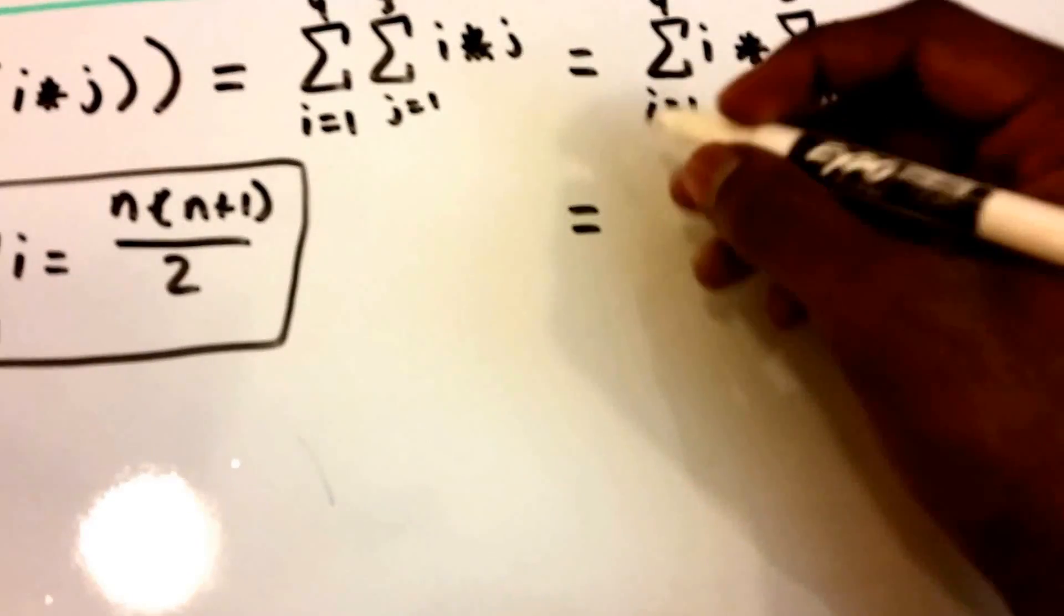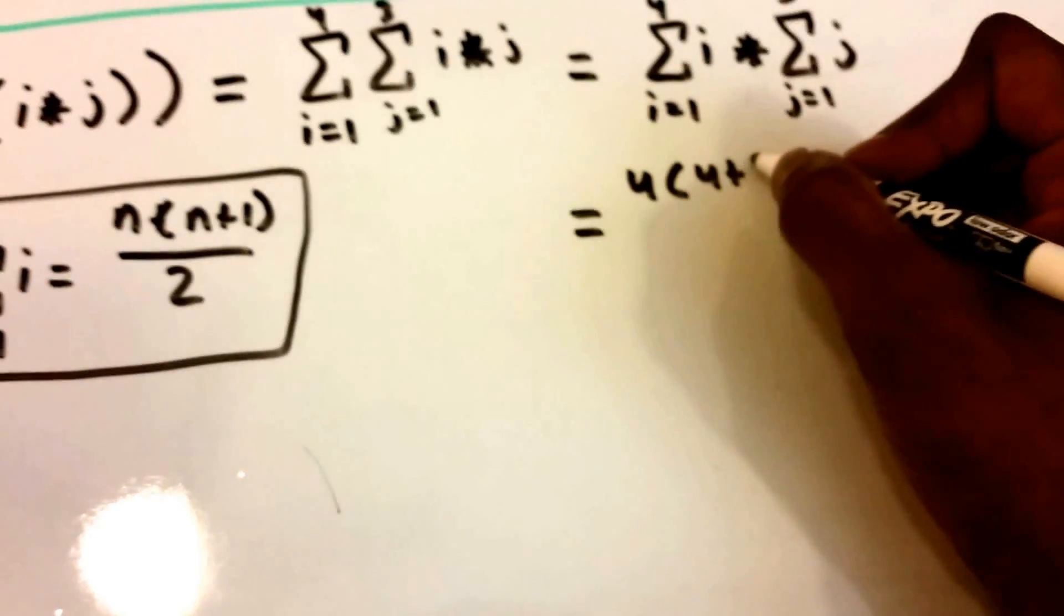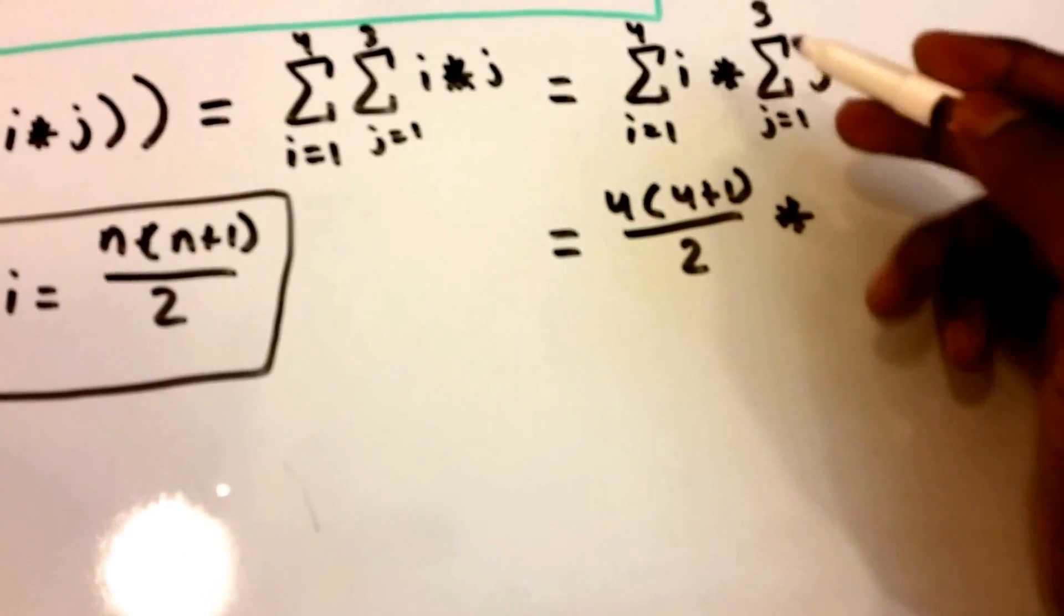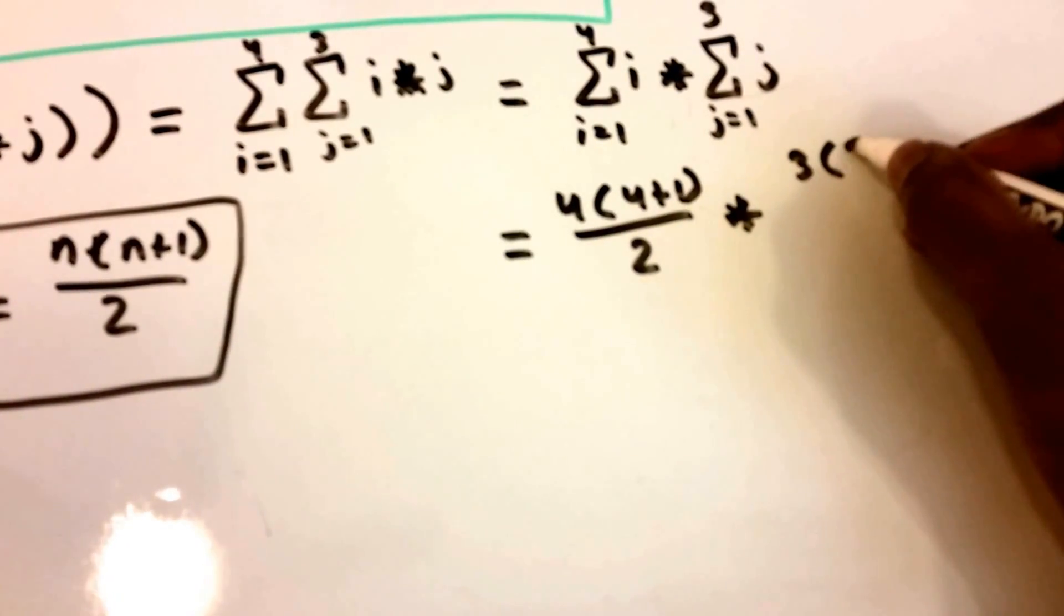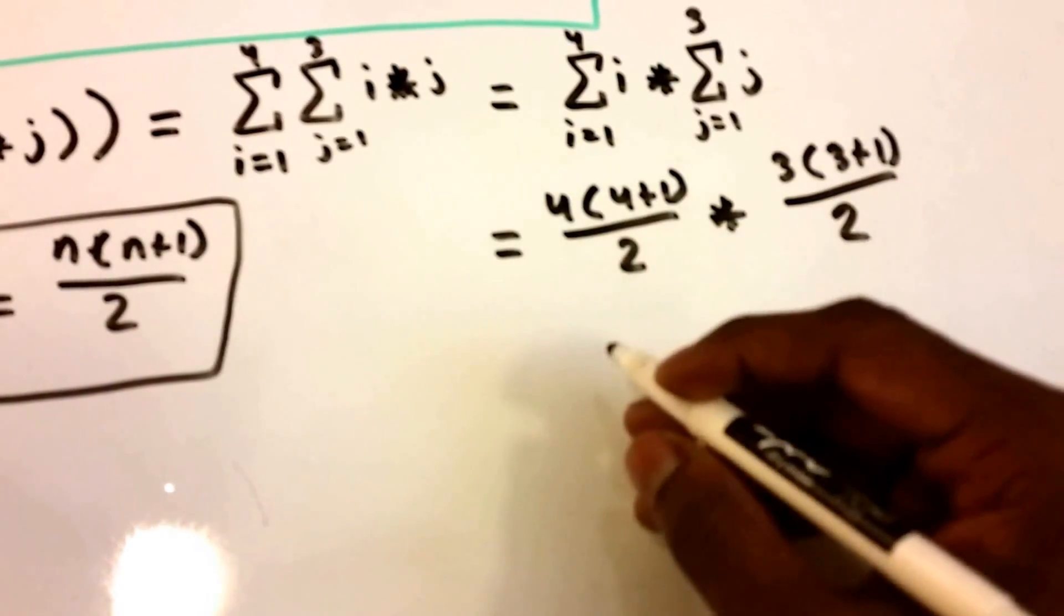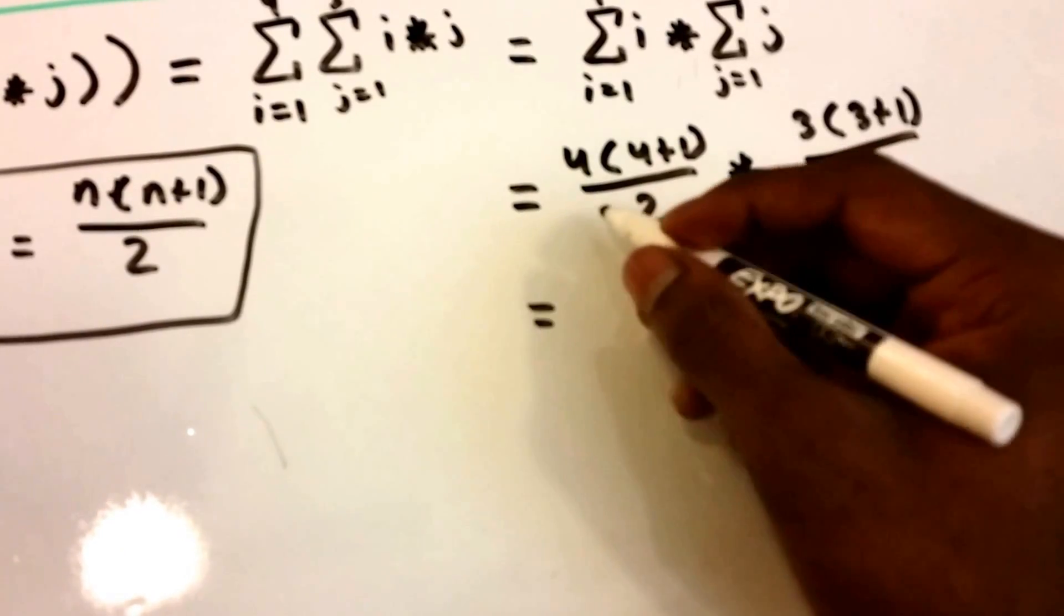So the first one will become 4 times 4 plus 1 divided by 2, and then the second summation will become 3 times 3 plus 1 divided by 2.